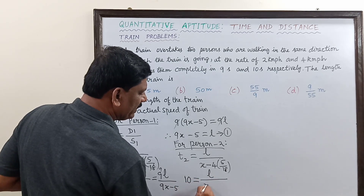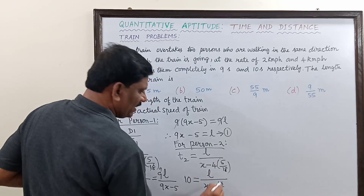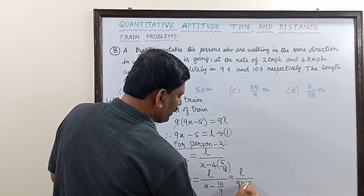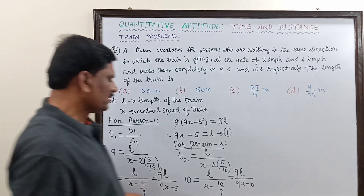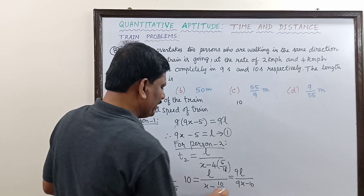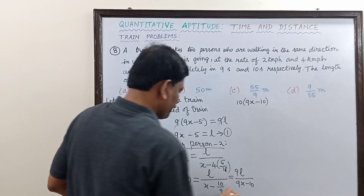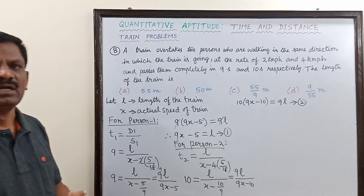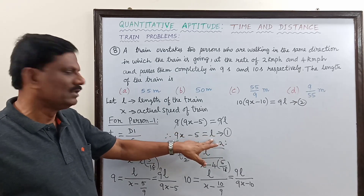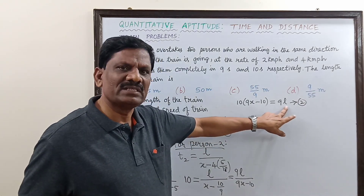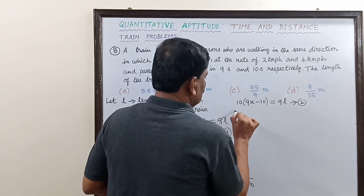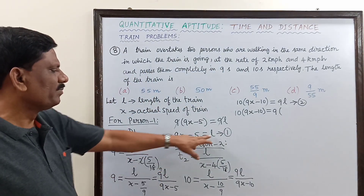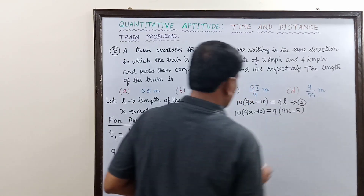Rearranging, we get 10 × (9x minus 10) equals 9L. From Equation 1, L equals 9x minus 5, so substituting: 10 × (9x minus 10) equals 9 × (9x minus 5).